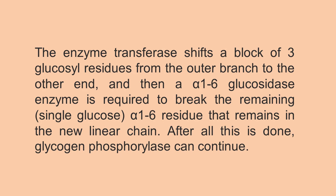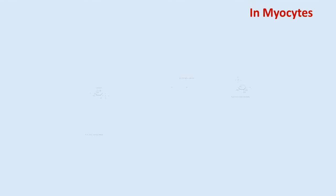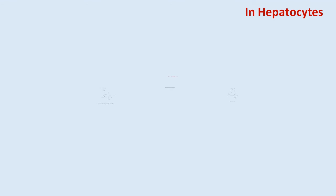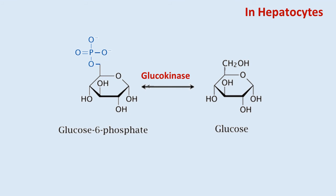Glycogen is left with one fewer glucose molecule, and the free glucose molecule is in the form of glucose-1-phosphate. In order to be used in metabolism, it must be converted to glucose-6-phosphate by the enzyme phosphoglucomutase in muscle. But in liver, glucose-6-phosphatase can convert glucose-6-phosphate into free glucose, which is released into the bloodstream to raise glucose levels.